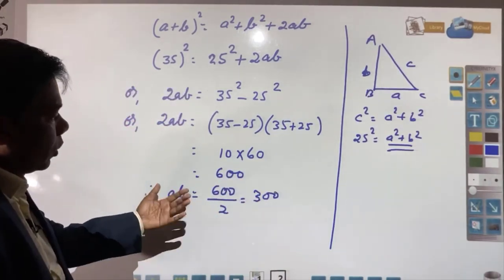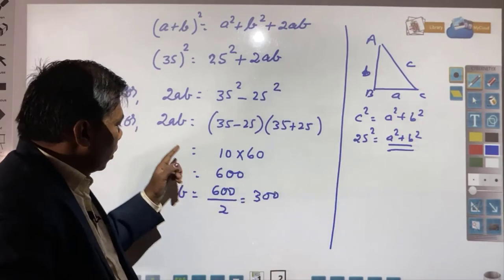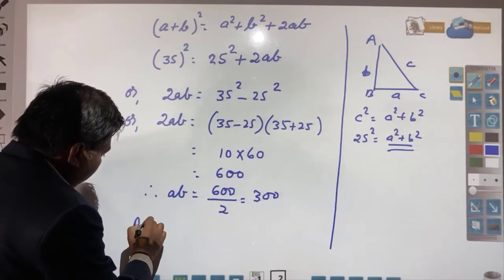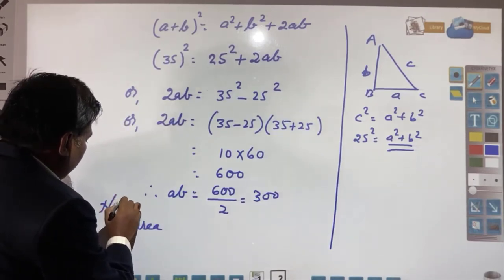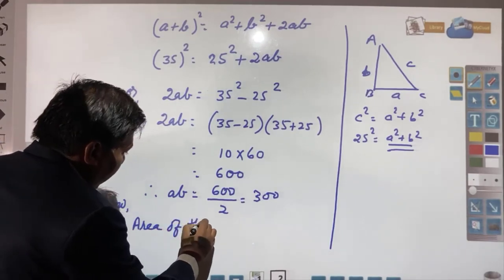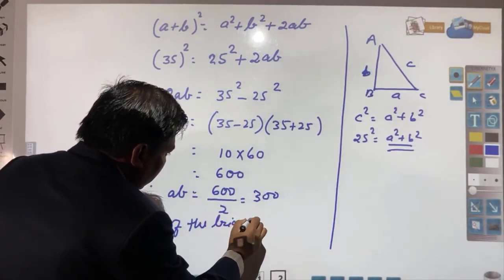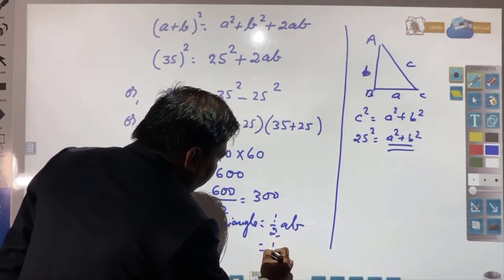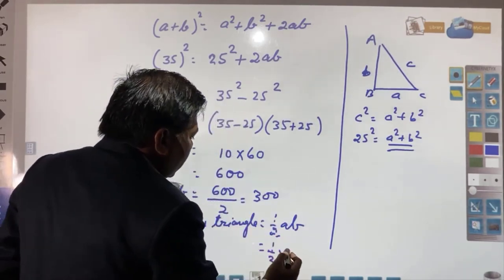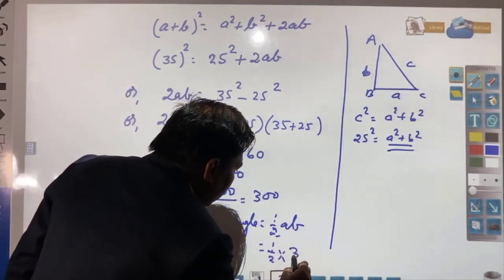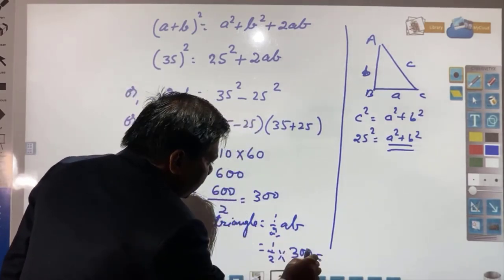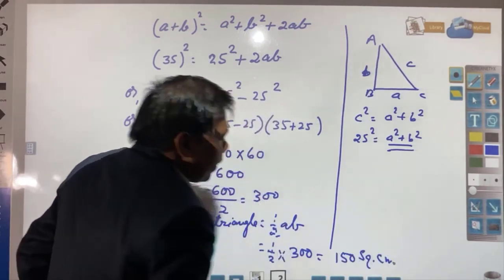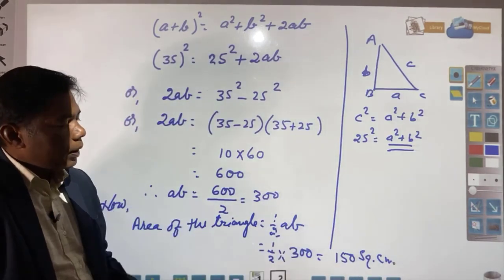Now, ab is what we needed to find in order to get the area of the triangle. Area of the triangle equals 1/2 times base times height, which is 1/2 times ab. We already have ab = 300, so area = 1/2 × 300 = 150 square centimeters. So the area of the triangle is 150 square centimeters.